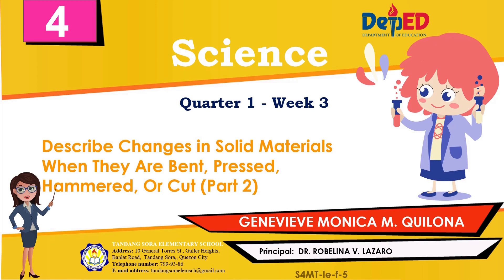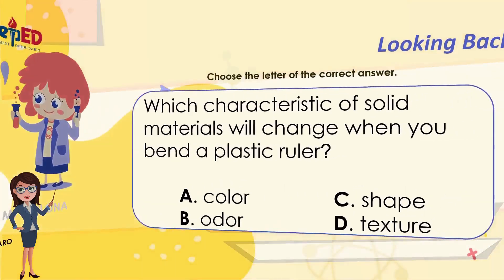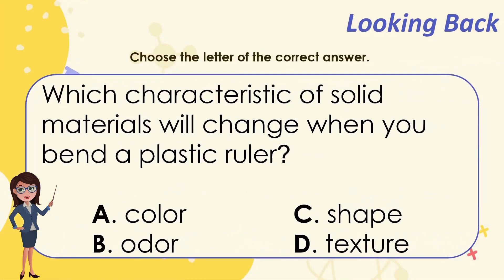Before we proceed with our lesson, let's have a short recap of our previous lesson. Which characteristic of solid materials will change when you bent a plastic ruler? A. Color, B. Odor, C. Shape, D. Texture. The correct answer is C. Shape. You got it right!